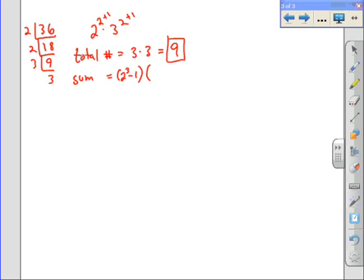And then over here, it's just going to be 3 squared plus 3 to the 1st plus 3 to the 0. So 2 cubed minus 1 is 7. 3 squared is 9 plus 3 is 12 plus 1 is 13. So the sum of the multiples of 2, sum of the multiples of 3, that gives you 91. So the sum of all the factors is 91.